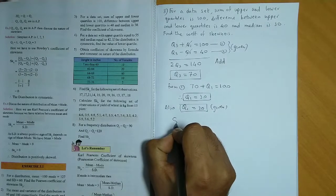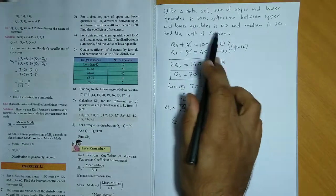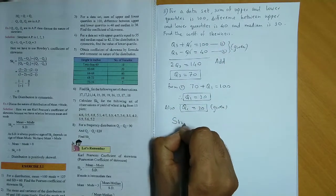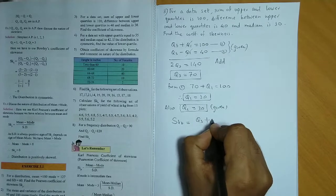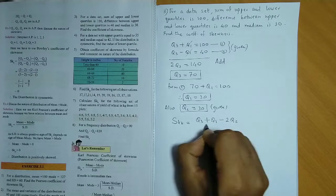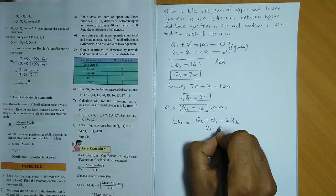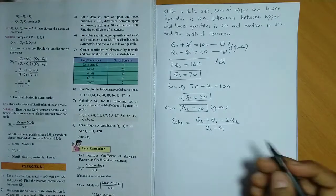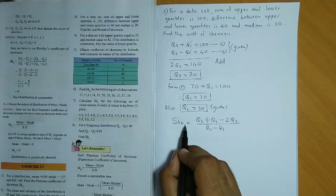That is Bowle's coefficient of skewness. So SKB is equal to Q3 plus Q1 minus 2 times Q2 divided by Q3 minus Q1. So we use the Bowle's coefficient of skewness that is SKB.